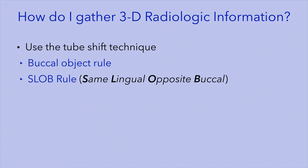A third approach to localize structures within the jaws is called the buccal object rule, also referred to as the tube shift technique or the SLOB rule — an acronym for Same Lingual Opposite Buccal. The premise of this technique is that images of objects that are superimposed can be separated by changing the angle of projection.